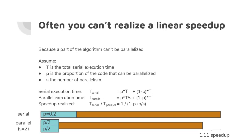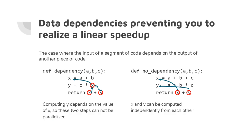What are the conditions that prevent a linear speedup? First, data dependencies: you have two instructions but you can only evaluate the second instruction if you have the value of the first. For example, x = a + b, then y = x × c — you can only compute this product after the first instruction is evaluated. These two steps cannot be parallelized.